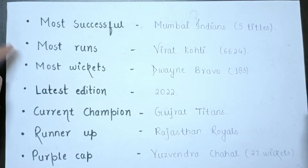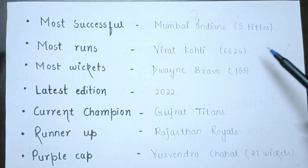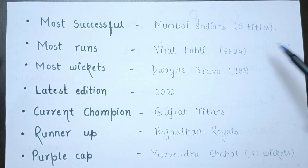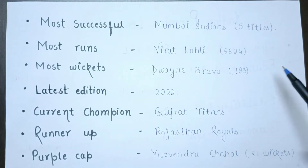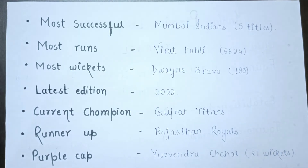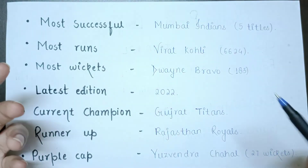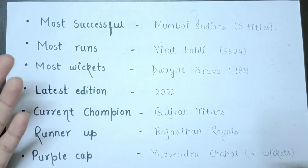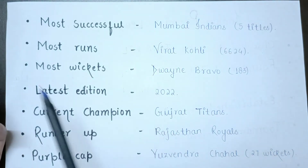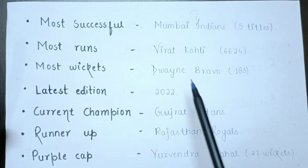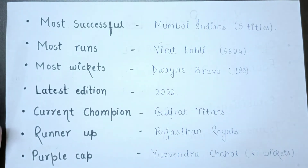Who has made the most runs in IPL? Virat Kohli has scored 6,624 runs in IPL. This is an important question for exams. Also remember: the most successful team is Mumbai Indians with 5 titles, and the second most successful team is Chennai Super Kings with 4 titles.